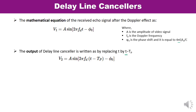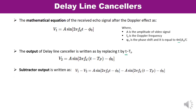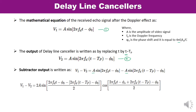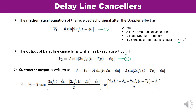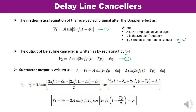The output of the subtractor is V = V1 − V2. Taking A as a common factor and applying the formula sin A − sin B = 2·sin((A−B)/2)·cos((A+B)/2), simplifying gives: V = V1 − V2 = 2A·sin(π·Fd·tp)·cos(2π·Fd·t − φ₀ − π·Fd·tp). This is the output of the subtractor.